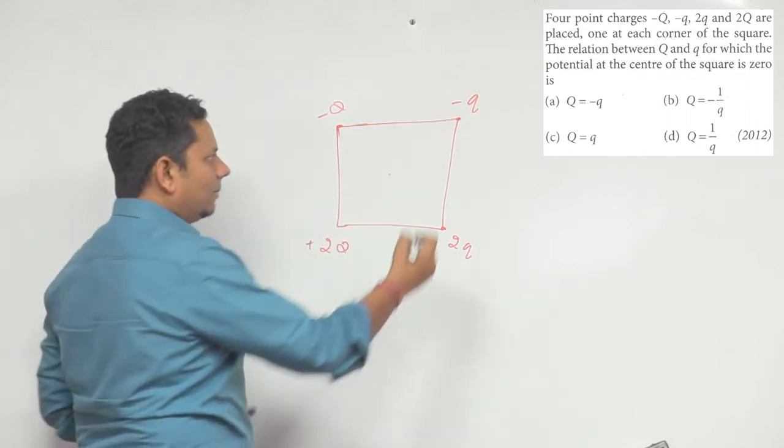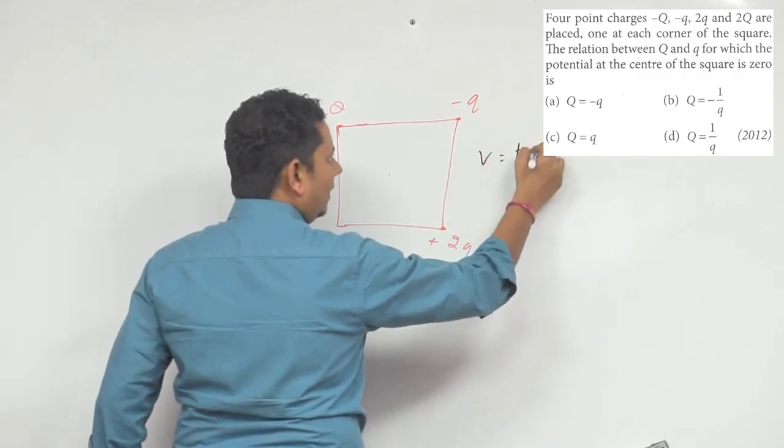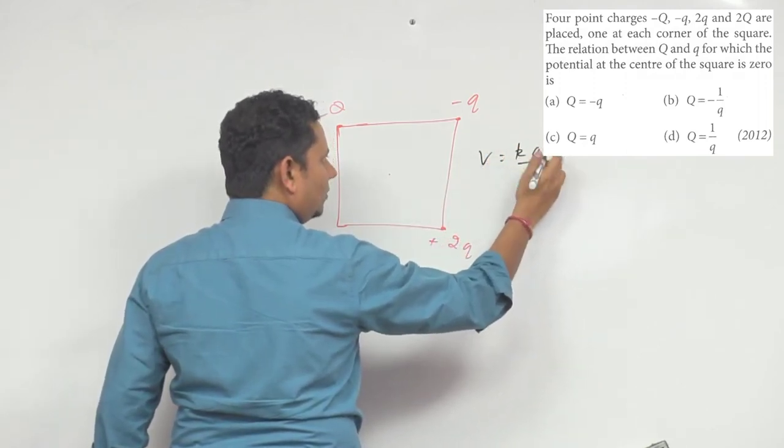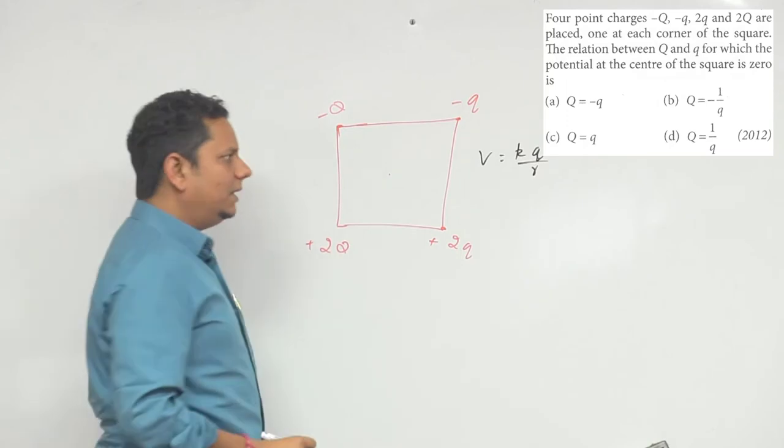Very simple question. We know that V equals kQ by R, where Q is the charge and R is the distance from the charge.